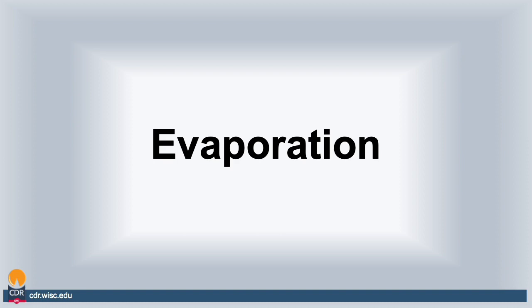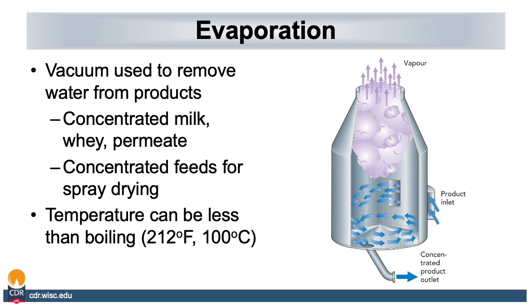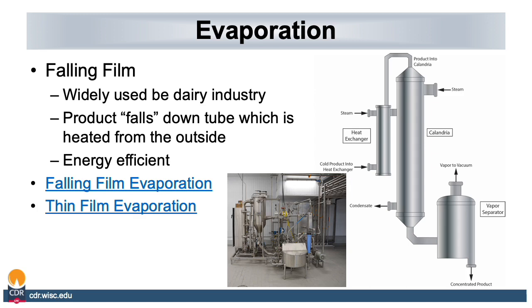Evaporation is another aspect of dairy processing that is important in the production of dairy ingredients. Evaporation is the process of using vacuum to remove water from products. This can be used to create concentrated products such as milk, whey, and permeate, or can be used to concentrate feeds for spray drying. Temperatures can be less than boiling because vacuum lowers the boiling point of milk. The most common type of evaporation used in the dairy industry is falling film evaporation, where product falls on a tube in which it is heated from the outside. The heated product is then put into a vacuum chamber where vacuum is pulled and the product is concentrated.